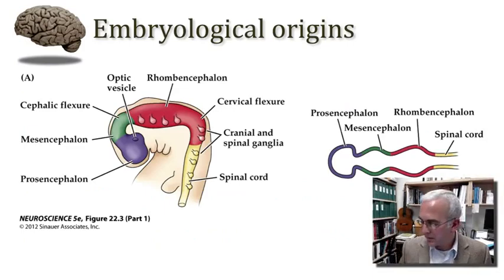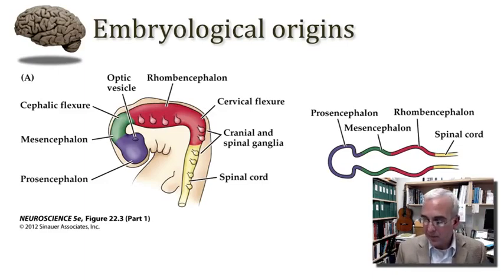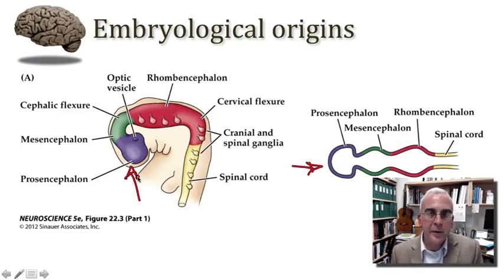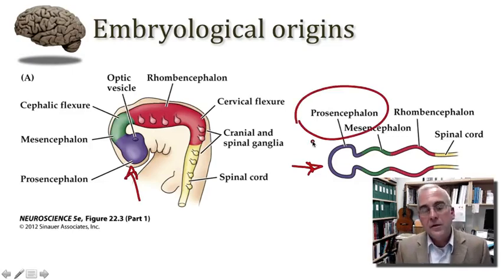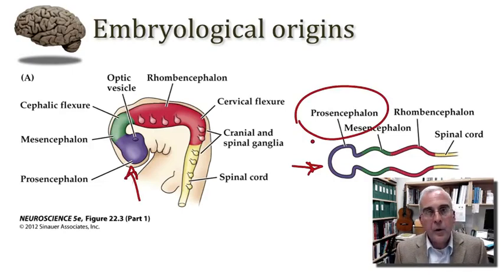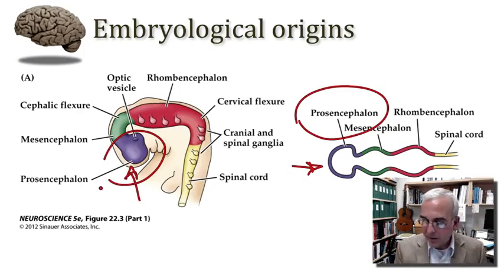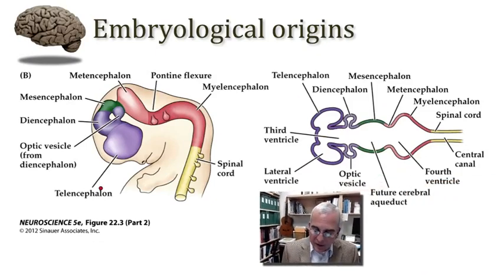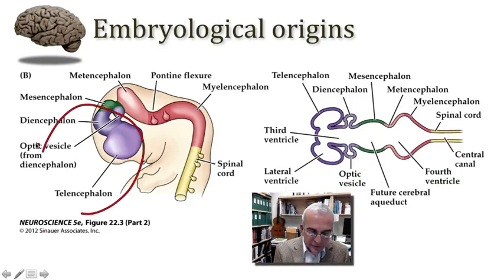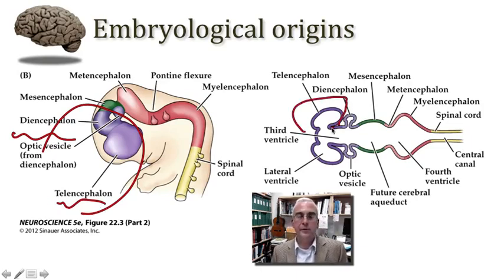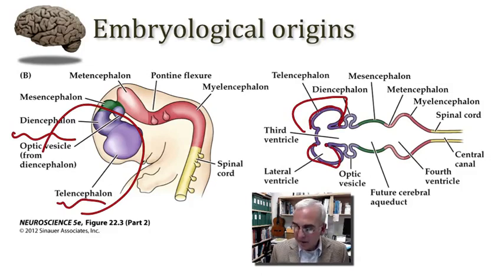Let's begin with a bit of embryology. The cerebral cortex and all the networks contained therein arise from the most anterior swelling that develops in early embryonic life. That anterior swelling of the developing neural tube is called the prosencephalon, or the forebrain. The nervous system is derived from the walls of a tube, and the anterior end of that tube is closed. As gestation proceeds, this prosencephalon further subdivides into a diencephalon and a telencephalon. It is from this telencephalic vesicle that the cerebral cortex develops, becoming the outer rind of tissue — the outer wall of the developing telencephalon.